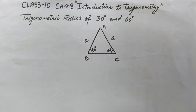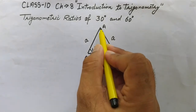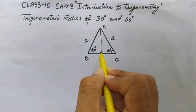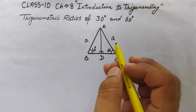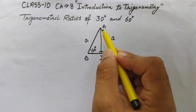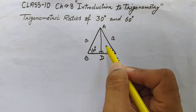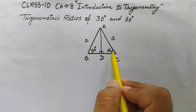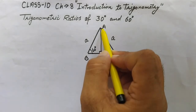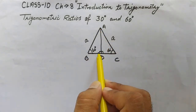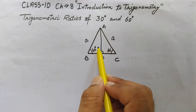Now we draw a perpendicular from A onto BC. Suppose AD is perpendicular from A to BC. You can see these two triangles, ABD and ACD, are congruent. This angle is 60 degrees, this angle is 90 degrees, and AD is the common side for both triangles, so we apply the Angle-Angle-Side criterion.